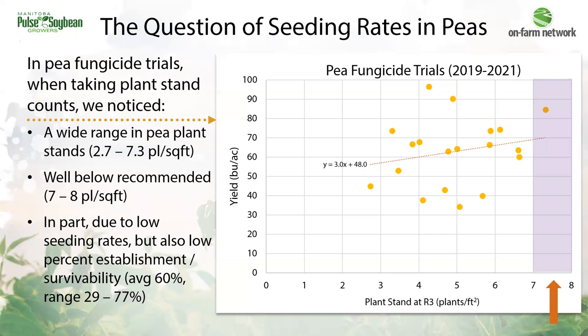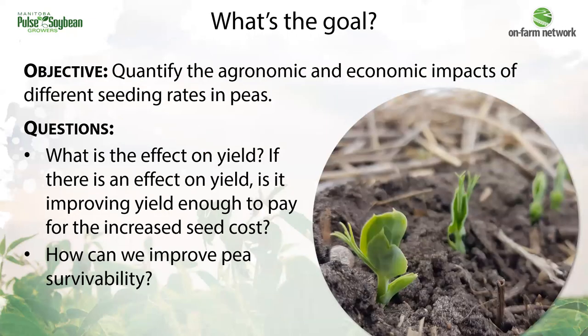Overall, these are the questions that really drove our interest into starting pea seeding rate trials in the on-farm network. The objective of these trials is to dive into the agronomic and economic impacts of different seeding rates in peas — is there an effect on yield, and if so, is yield improved enough to pay for the extra seed cost? The other question is how we can improve pea survivability and plant establishment.